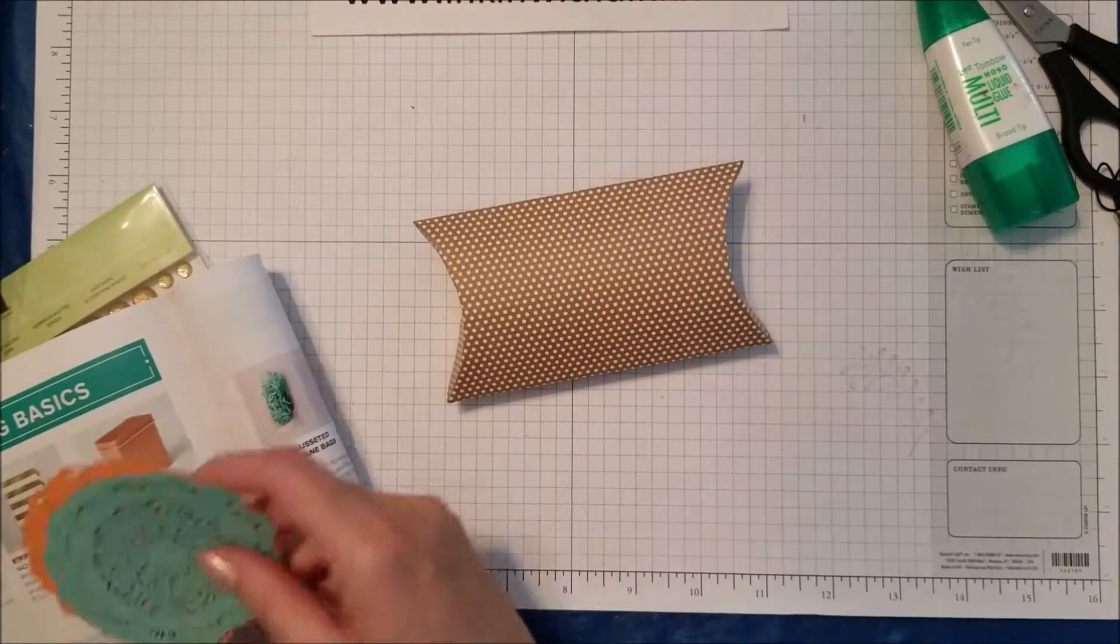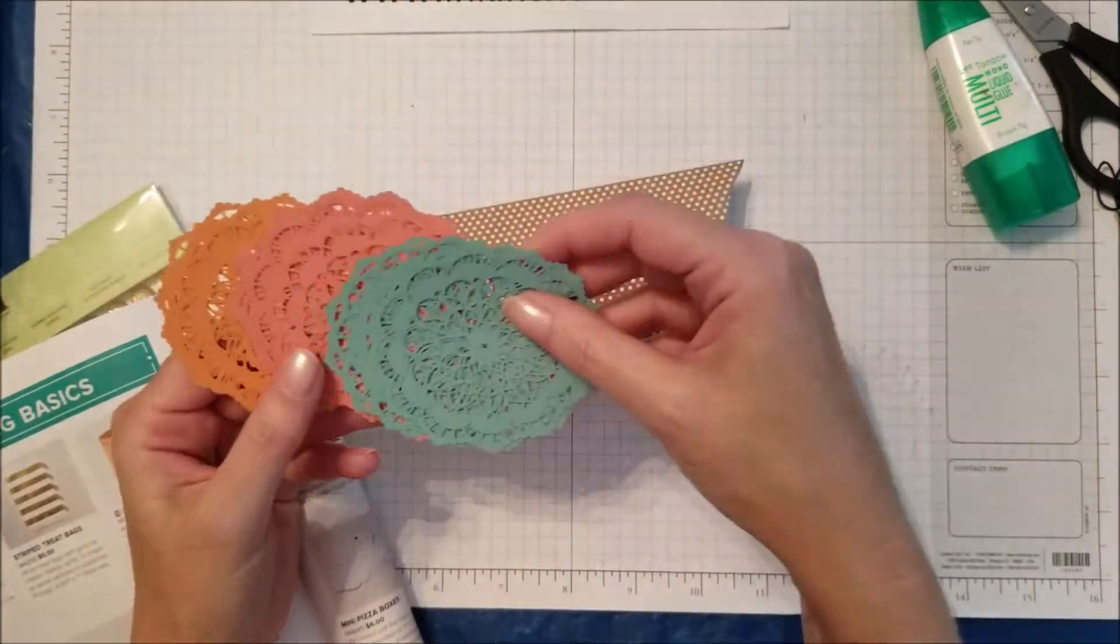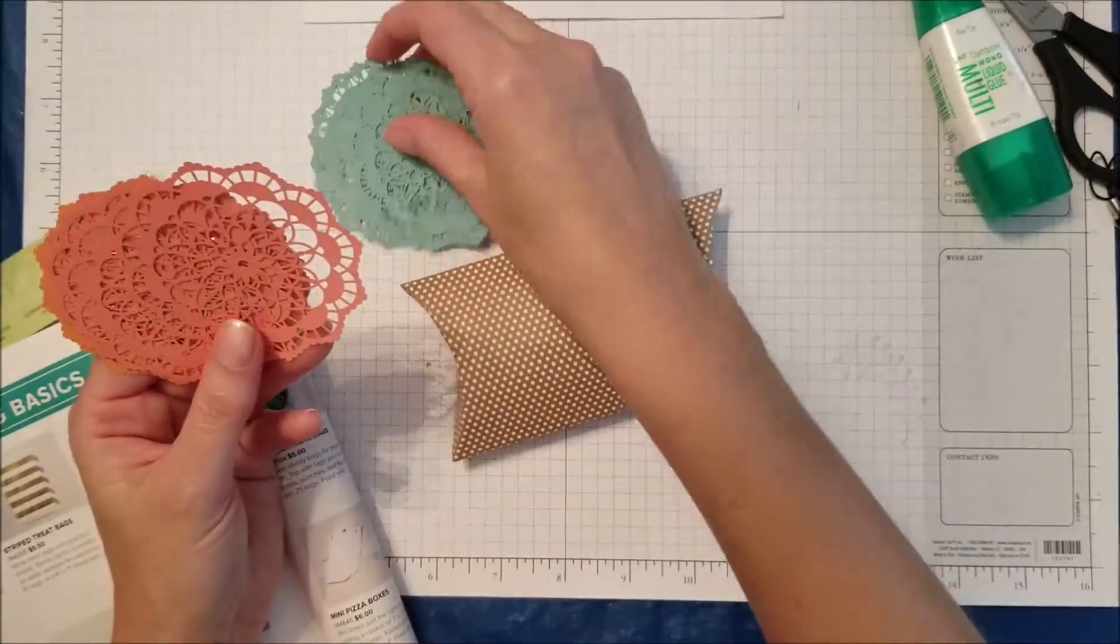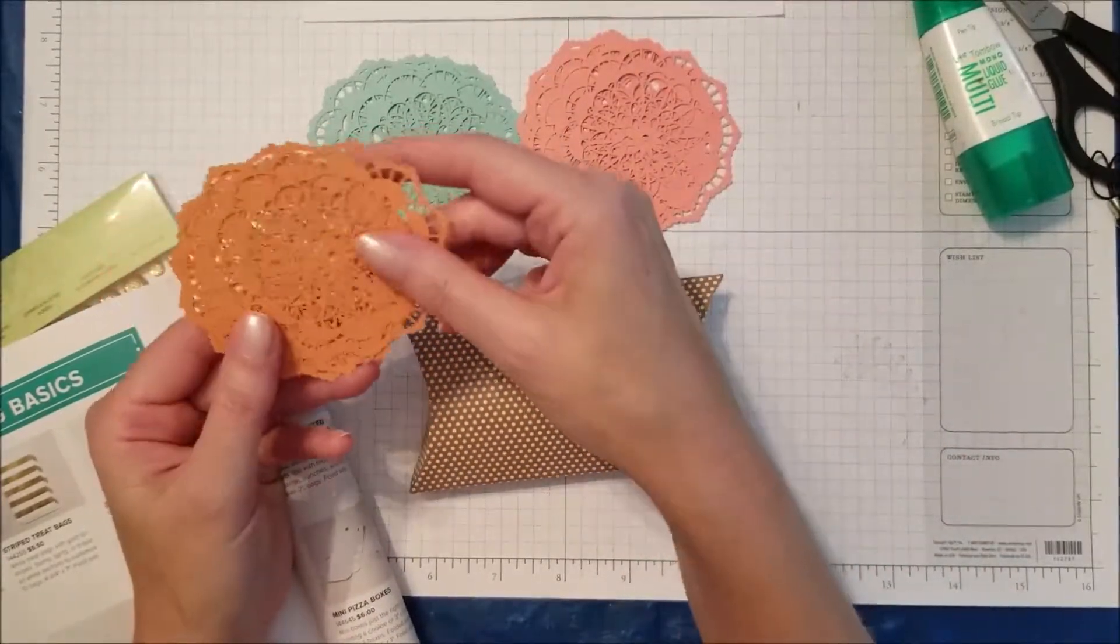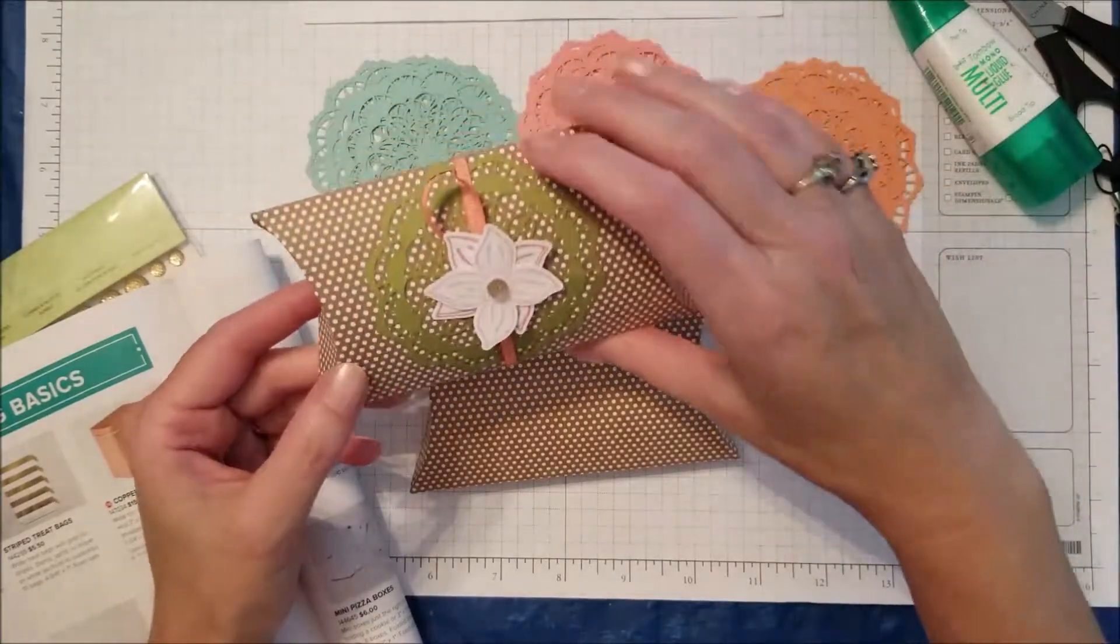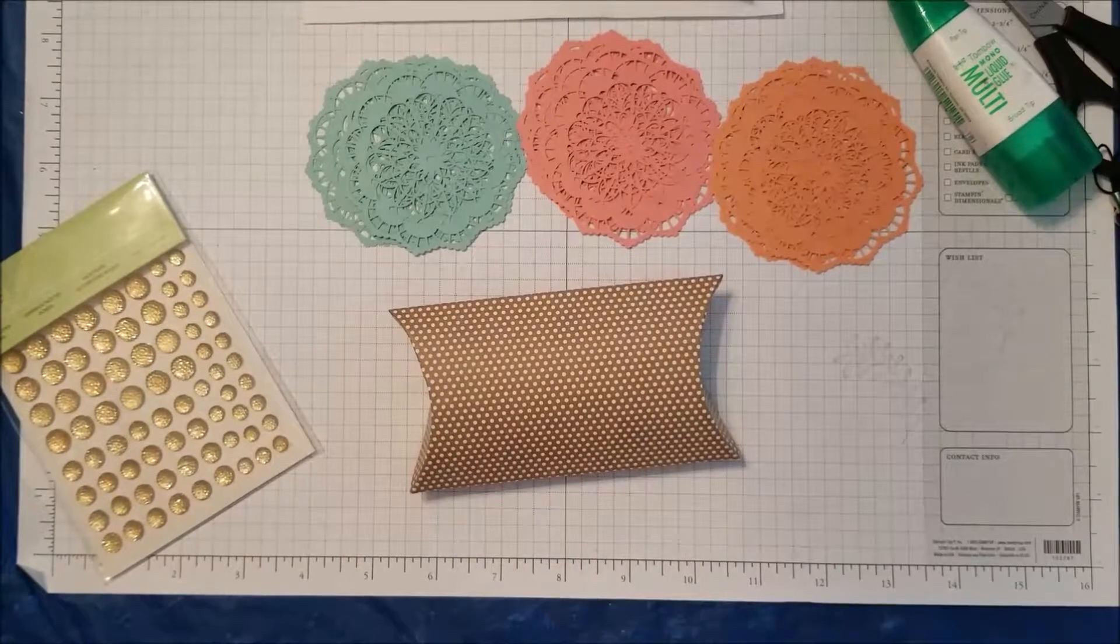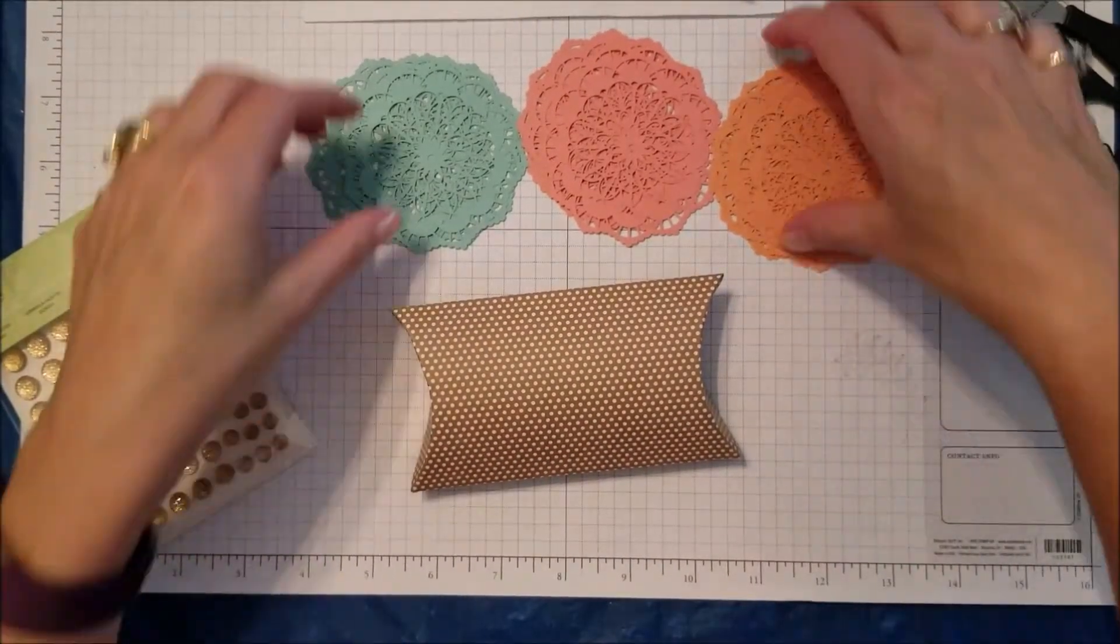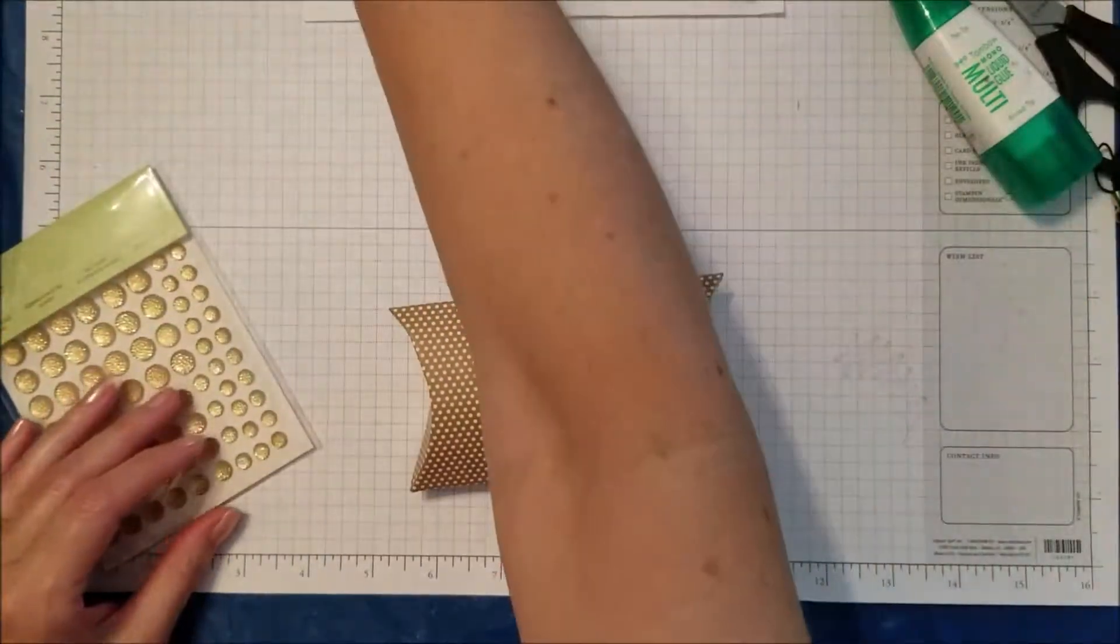We've got coastal cabana, just this color right here, we've got flirty flamingo which is the pinky color, we've got grapefruit grove, and then this green that I used on this box is the old olive. You get six of each of the four of them and they're so pretty and so cute for only four dollars and fifty cents, a super deal.